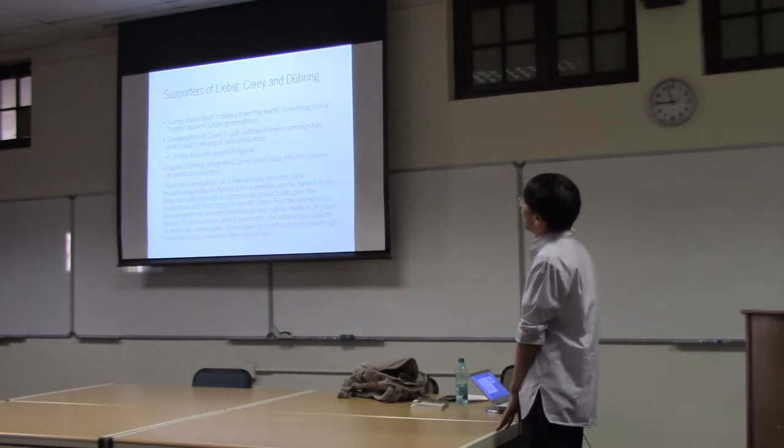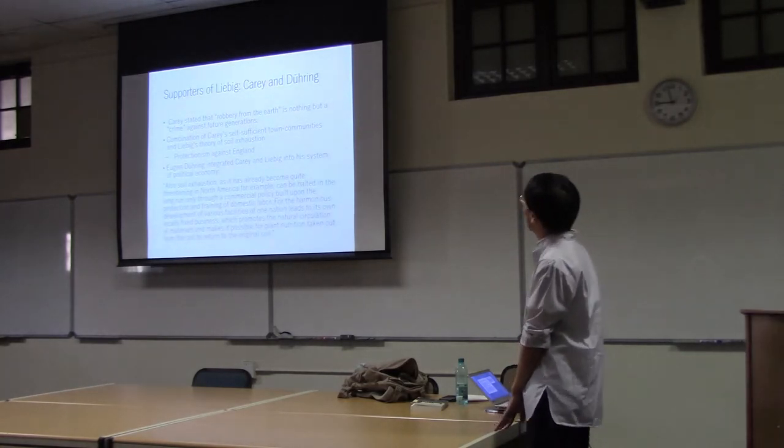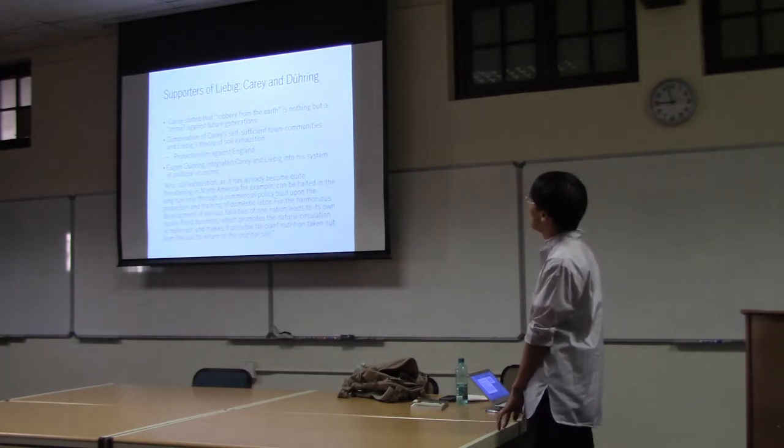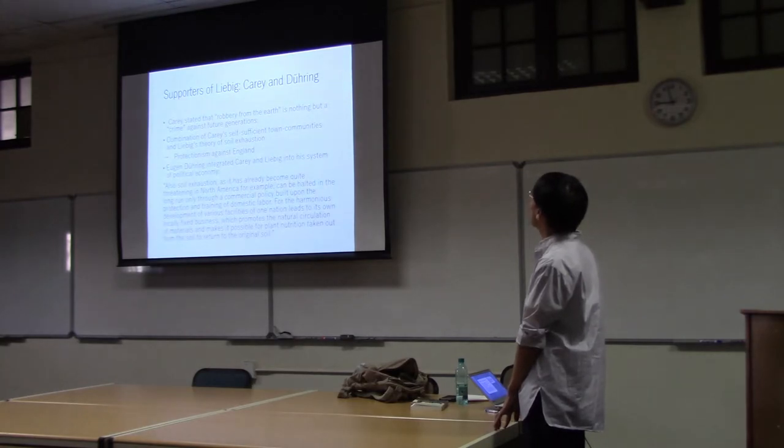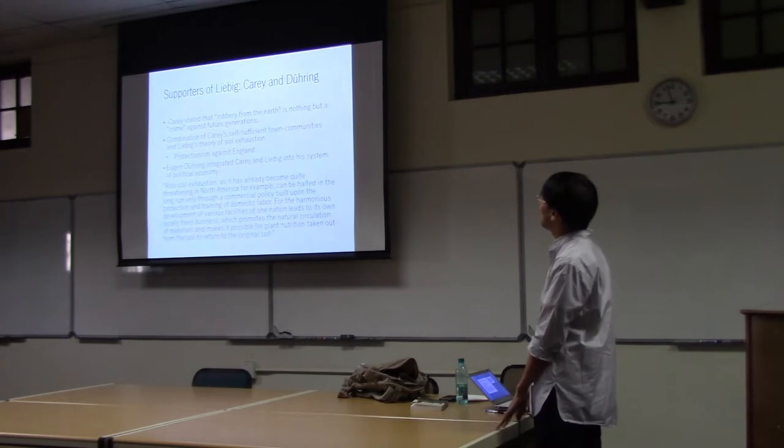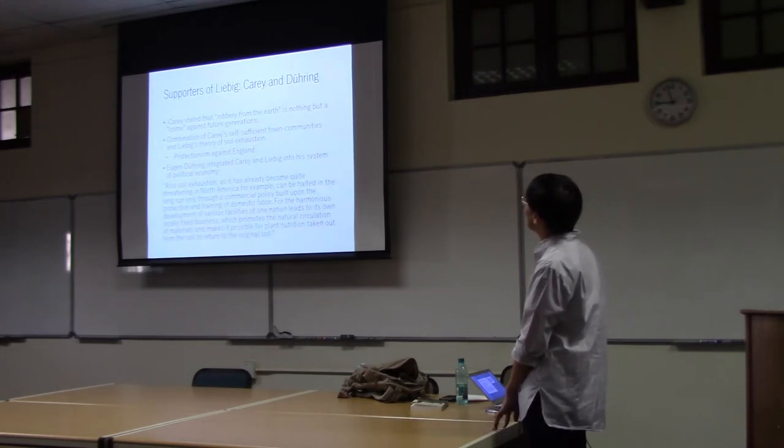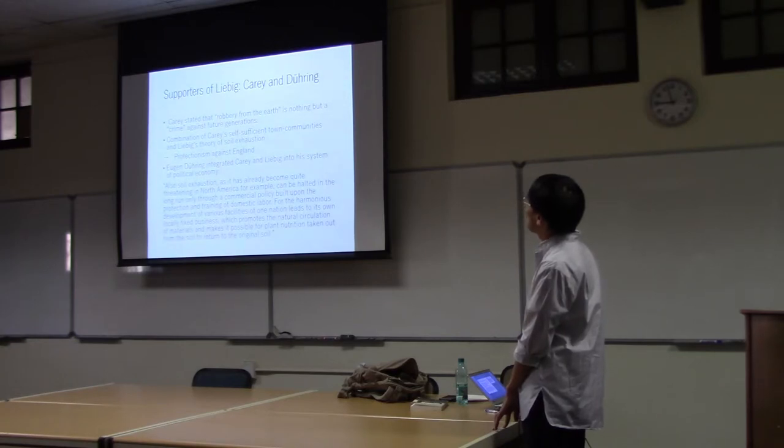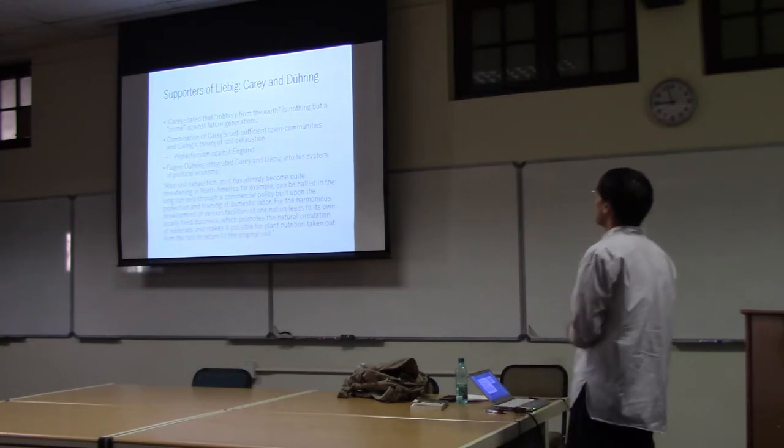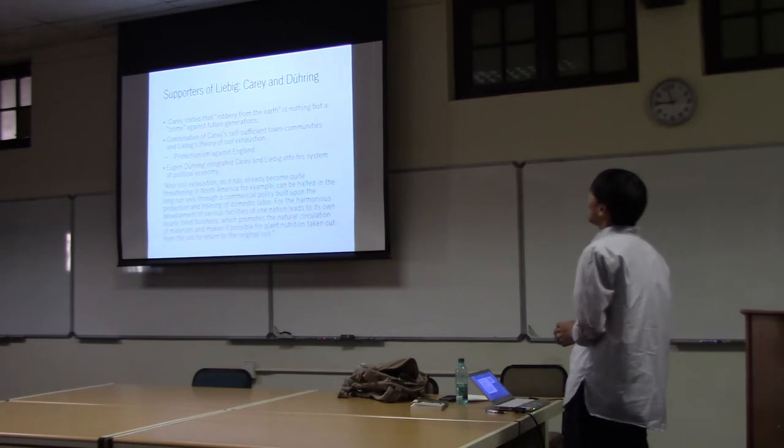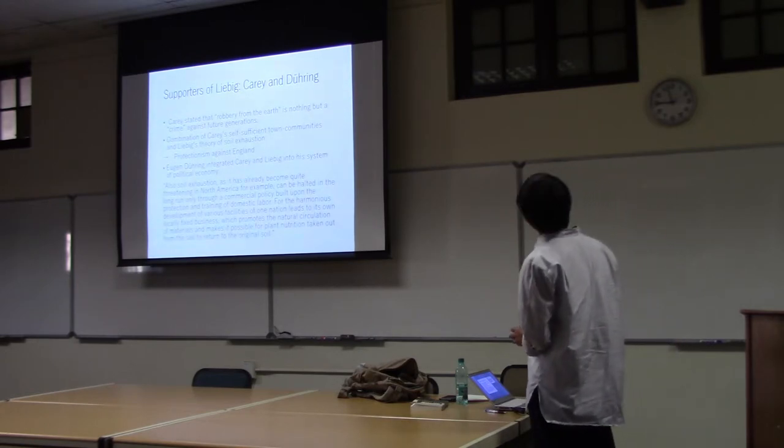In Europe, Eugen Dühring, the German guy in Berlin, integrated Carey and Liebig into his system of political economy. He became very popular among workers. He says soil exhaustion can be halted in the long run only through a commercial policy built on protection and training of domestic labor. The harmonious development of various facilities of one nation leads to natural circulation of materials and makes it possible for plant nutrition from the soil to return to the original soil.